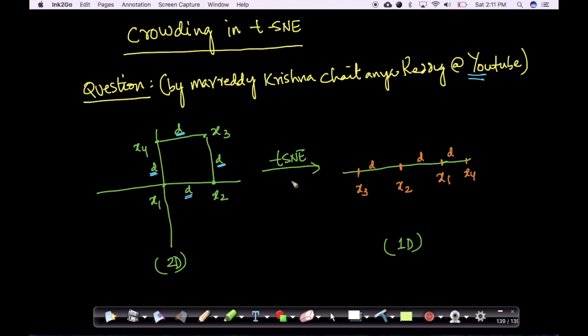Now, when we try to convert this data from 2D or when we try to project the data from 2D to 1D in t-SNE, I said that this is one projection, but what is happening here is I put x4 here.